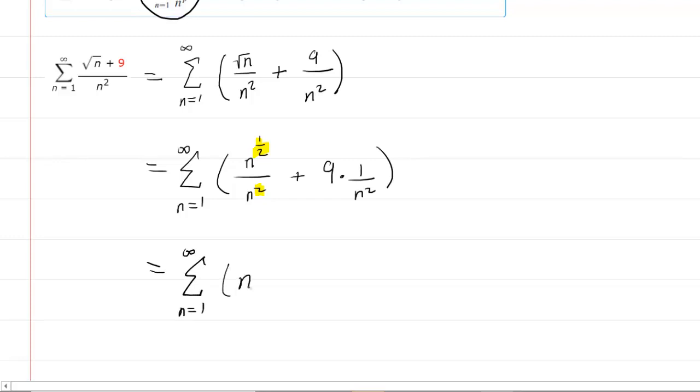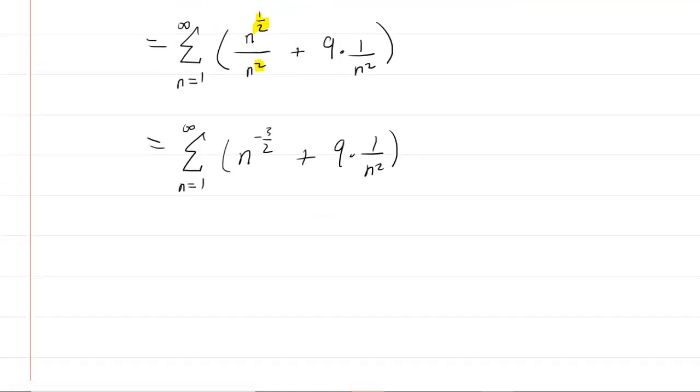Now we have n raised to the negative 3/2, but we don't want negative exponents. We can take n to the negative 3/2 and transition it to the denominator so it becomes n to the positive 3/2, with 1 in the numerator.